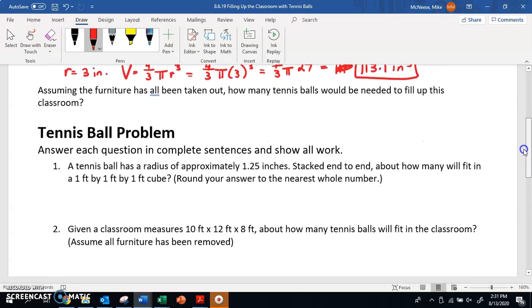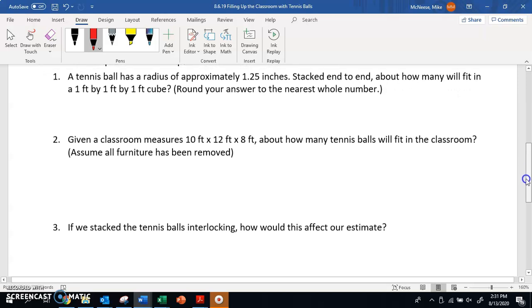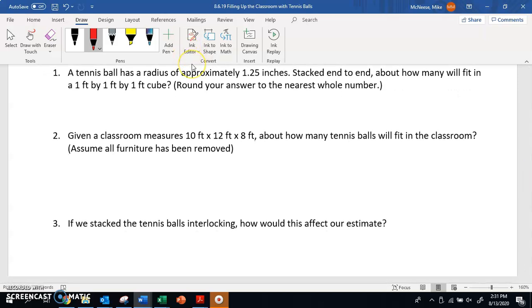All right, so tennis ball problem. It says answer the question in complete sentences and show all work. So it says a tennis ball has a radius of approximately 1 1/4 inches. Anytime you are given info like this, always underline, highlight, star, do something to make it stand out, right? So radius of 1 1/4 inches. Stacked end-to-end, about how many will fit in a 1 foot by 1 foot by 1 foot cube. Round your answer to the nearest whole number.